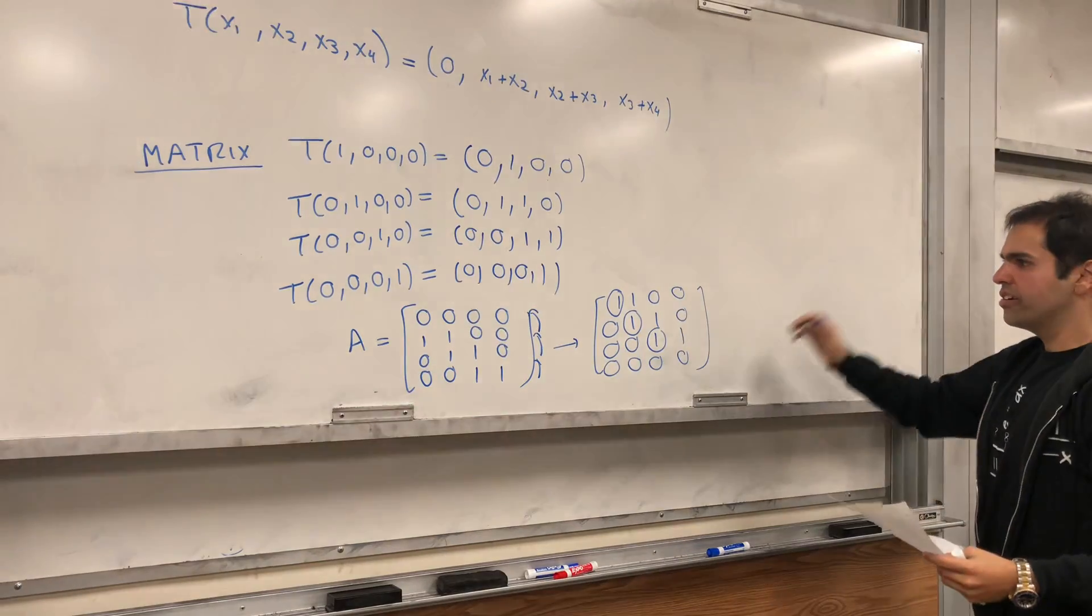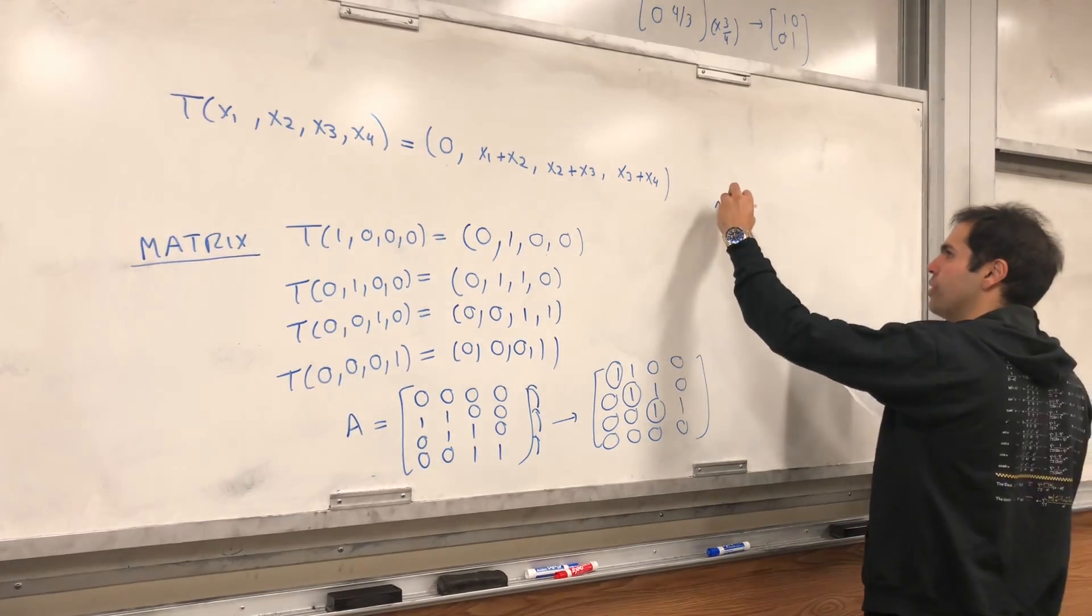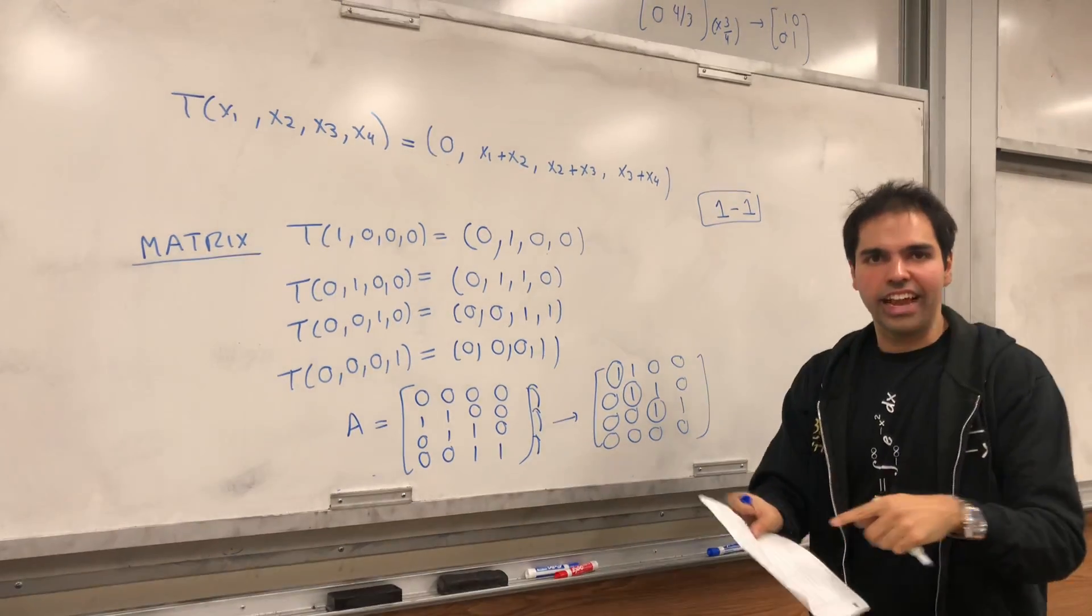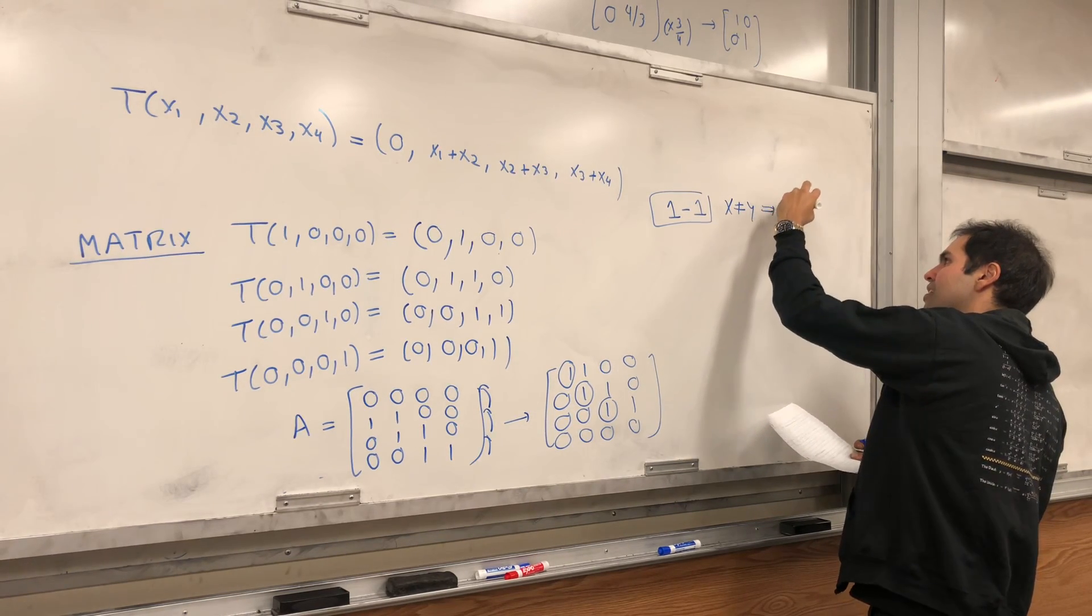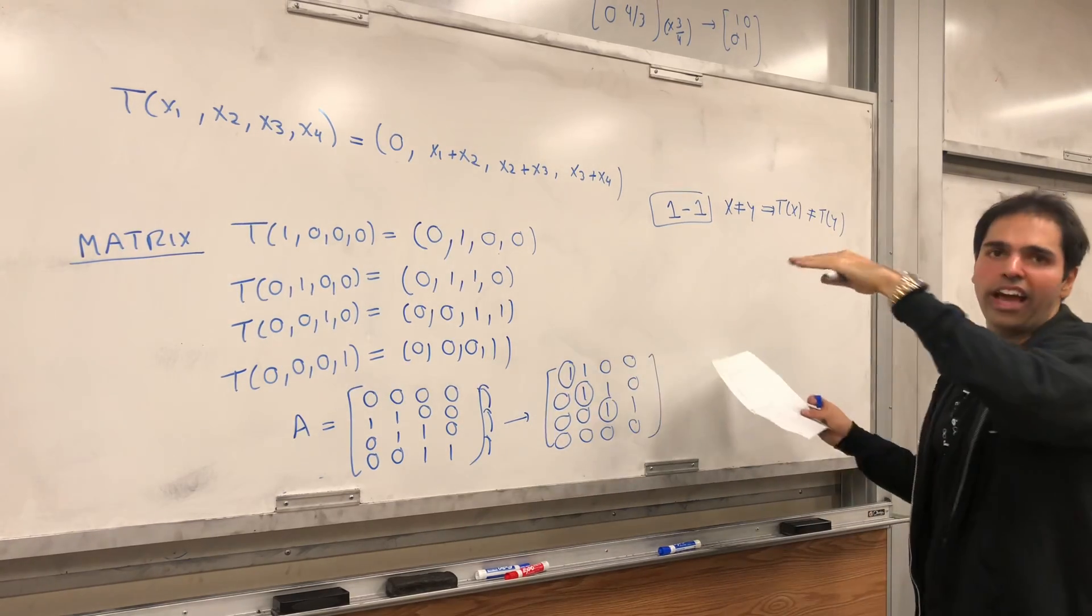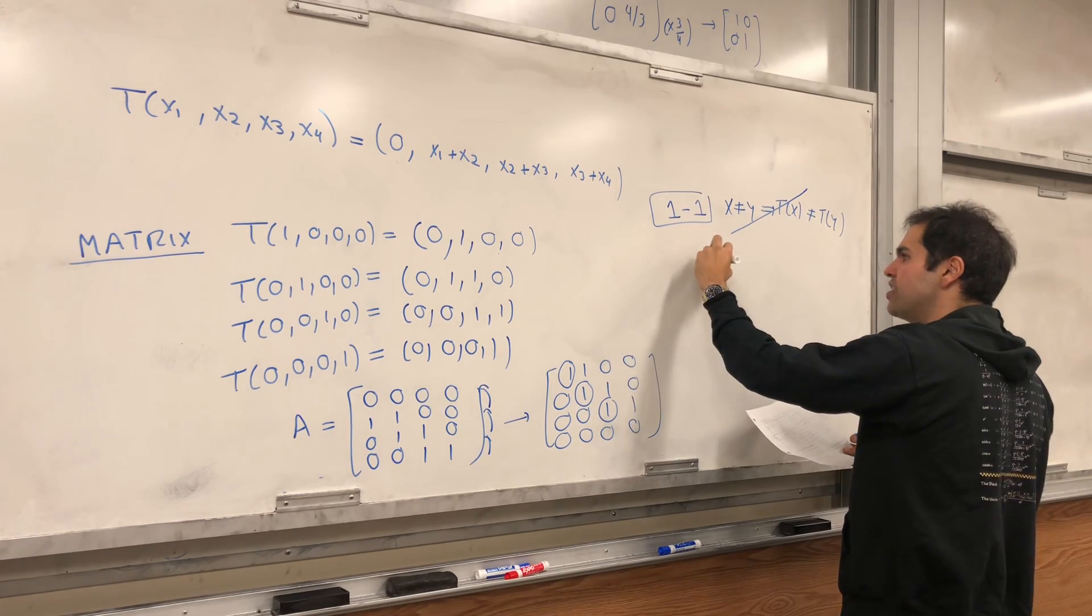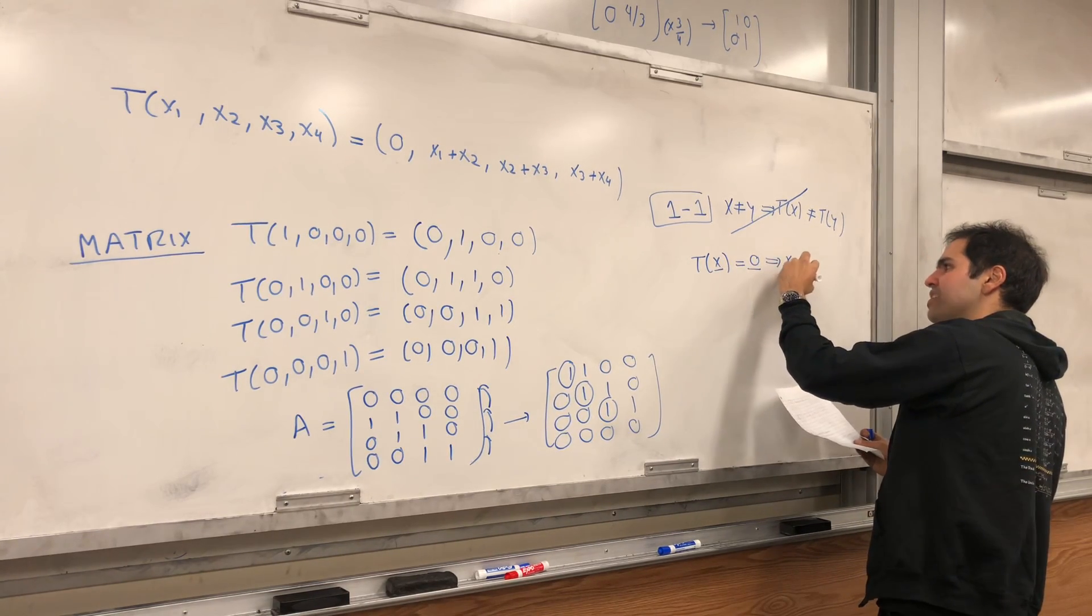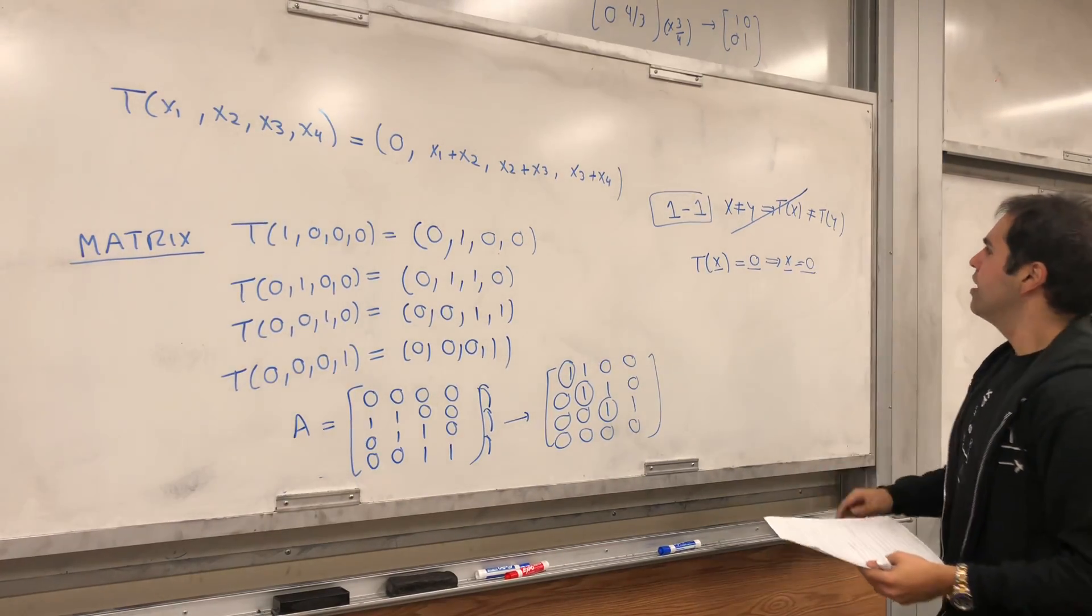And so you have to understand what is one-to-one technically. Technically, it means, like in calculus, if x is not equal to y, then t of x is not equal to t of y. That is the calculus definition. For linear algebra, there's an easier one. It just means t of x equals 0 implies x equals 0. I can prove it another day, if you'd like.